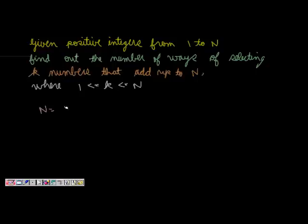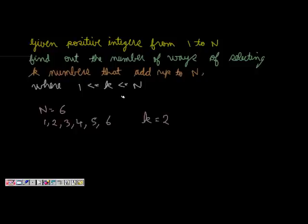Let's take an example where n is 6. So we have integers 1, 2, 3, 4, 5, and 6. Then we say: find out the number of ways of selecting k numbers — let's say k is equal to 2, and k should be between 1 to n inclusive — such that they add to n. So we have to select 2 numbers and find out how many of them add to 6.